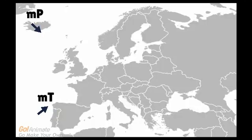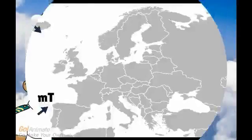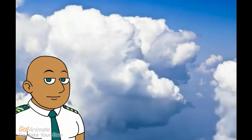Let's look at maritime polar air. The air has its source in the Greenland area. As the air moves south, it is warmed from below and becomes unstable. This will produce convection, which creates cumulus clouds.